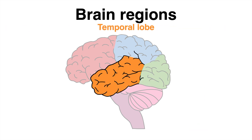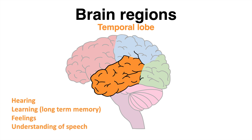The temporal lobe has neurons which predominantly fulfill functions such as hearing and learning. This region is also responsible for feelings. Neurons in a specific area of the temporal lobe are associated with contributing to our understanding of speech.